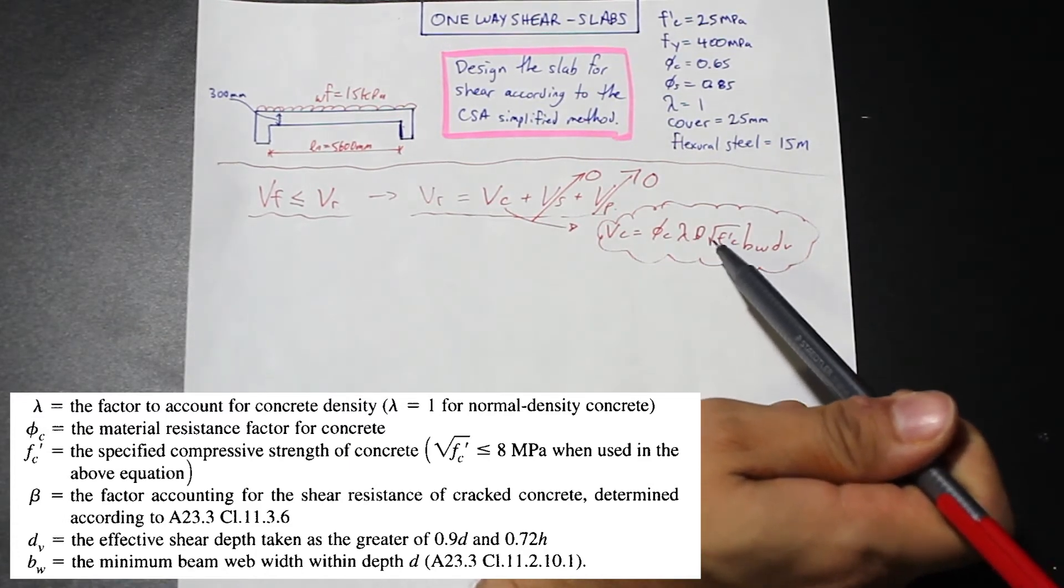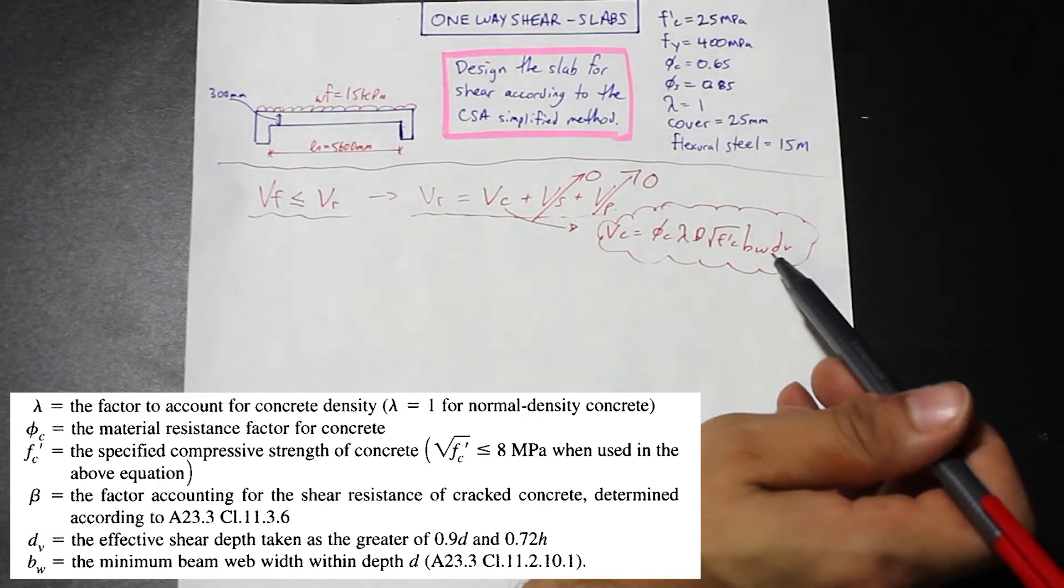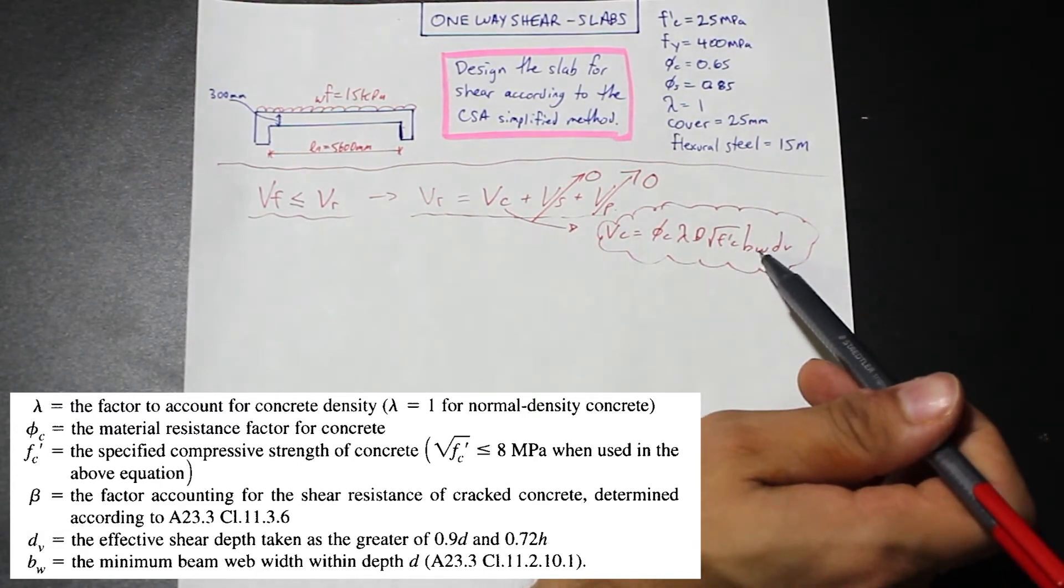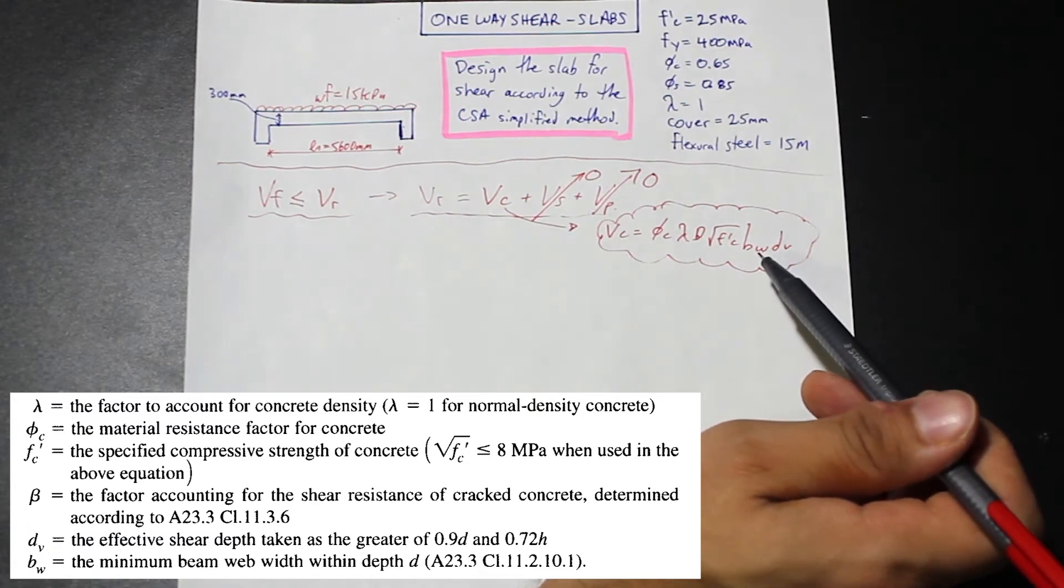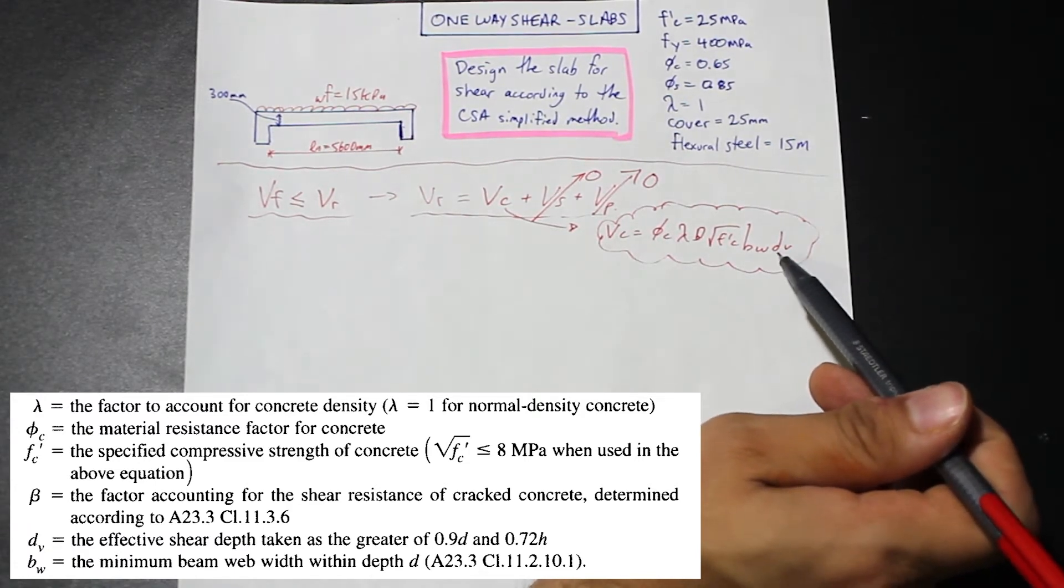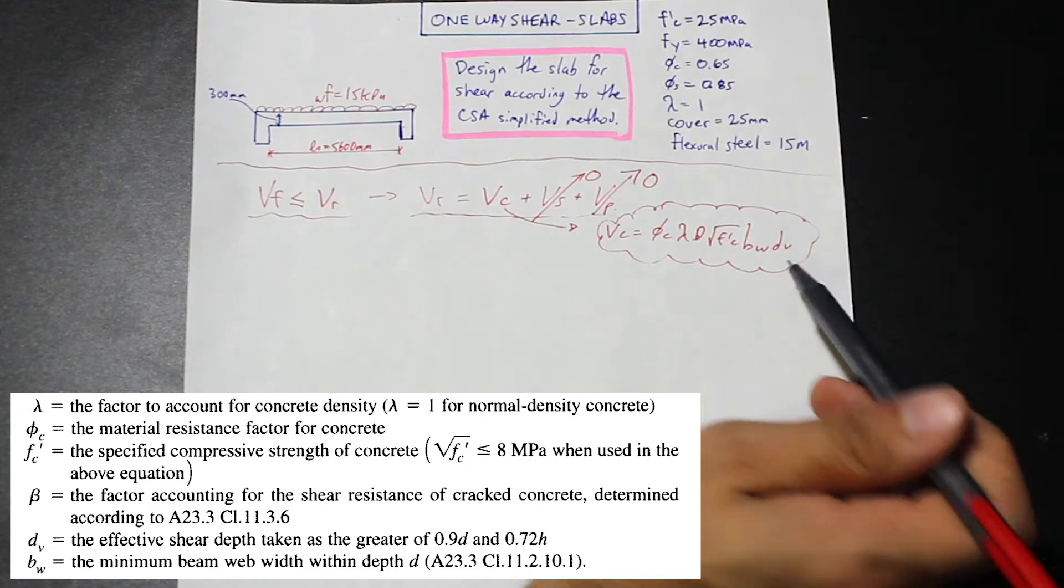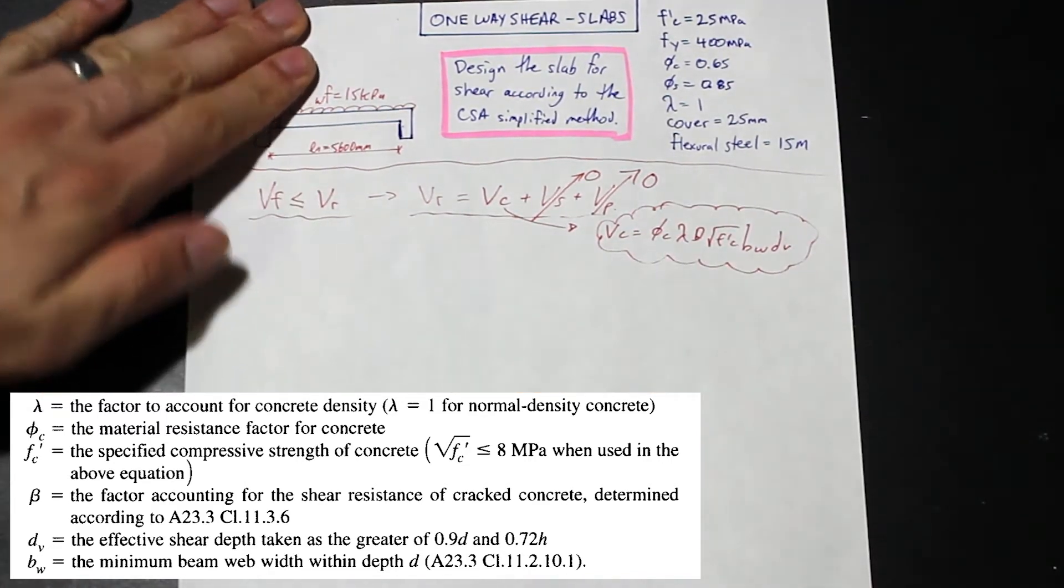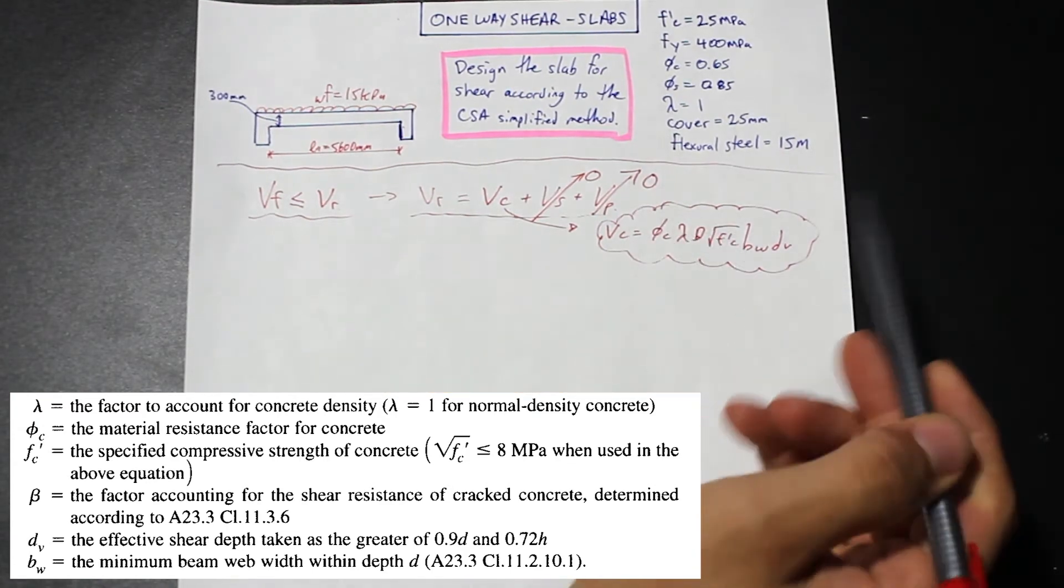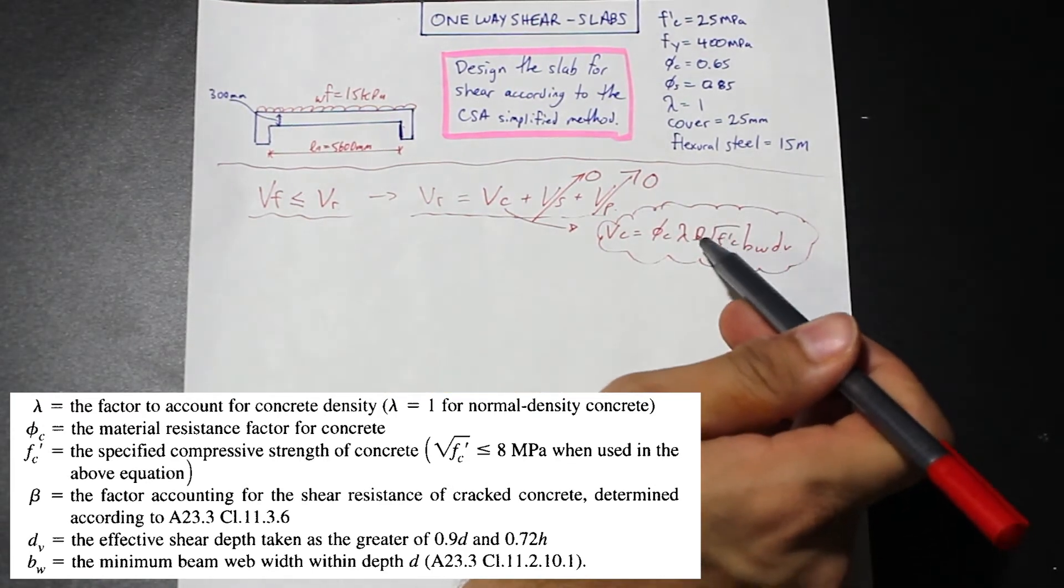Beta is the factor for shear resistance of cracked concrete. Now, this is one that we're going to have to look into a little more closely. F prime c is given. That's concrete strength. Bw is the effective beam web width within depth d, and dv is our effective shear depth. A lot of these things are given. Phi c is given, lambda is given. The ones that we have to take a look at are beta and dv.